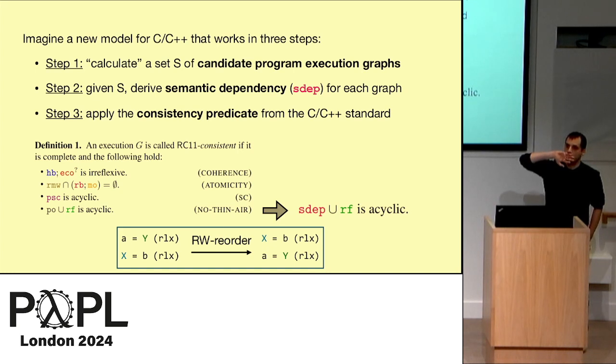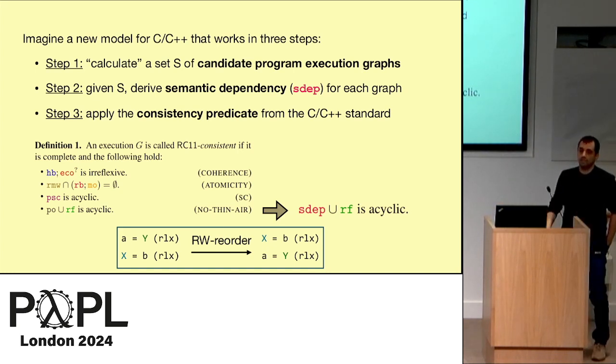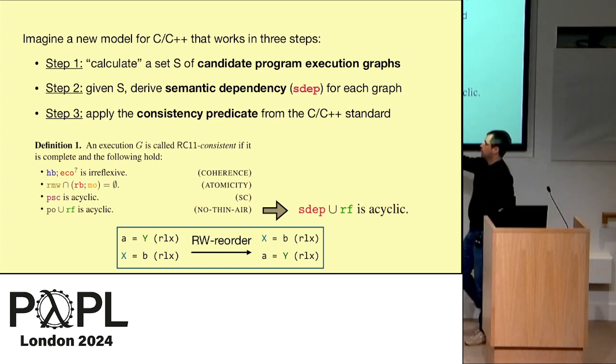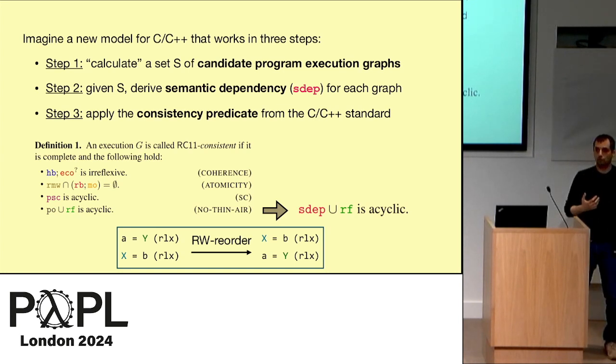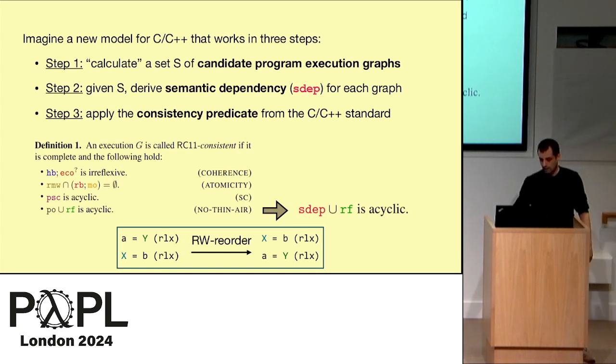So why do we want this? Because it will allow us to have a more efficient implementation, and we will be able to reorder relaxed accesses, something we cannot do in RC11. SDEP is a subset of program order. We'll be able to reorder a relaxed read followed by relaxed write, which we cannot do in RC11, as long as they are independent. The compiler can do this, the hardware can do this. We can actually use ARM with primitive accesses for relaxed accesses of C.